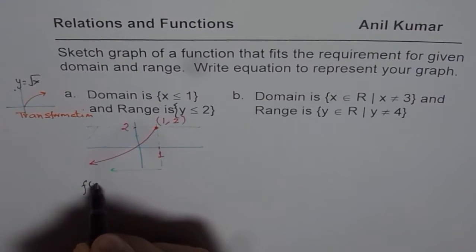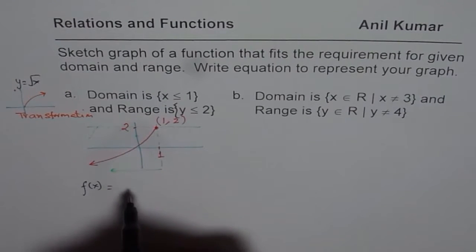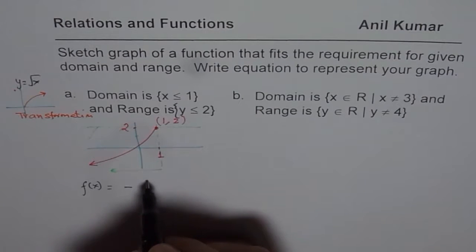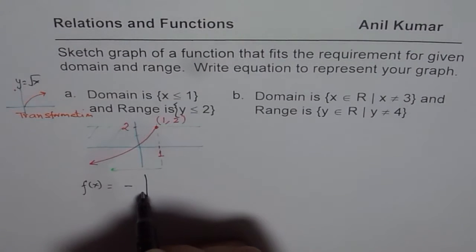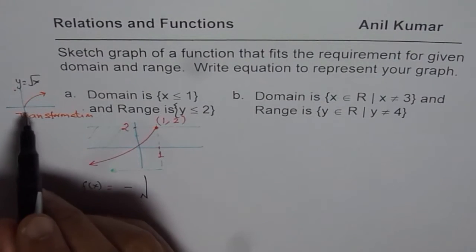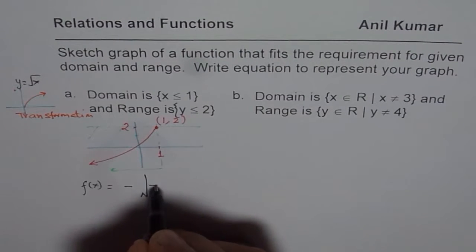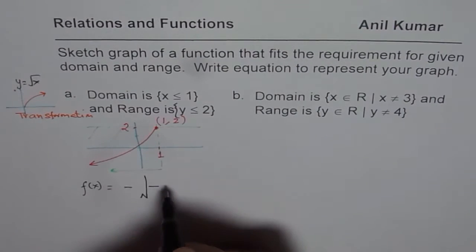since it is negative, this is the reflection on x-axis. And within square root, we can say reflection on the y-axis means negative. And now we need to translate one unit to the right, that means x minus 1.